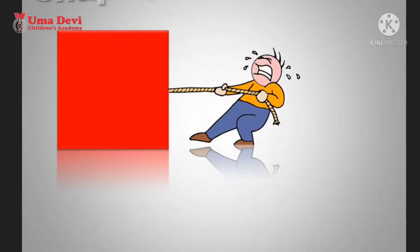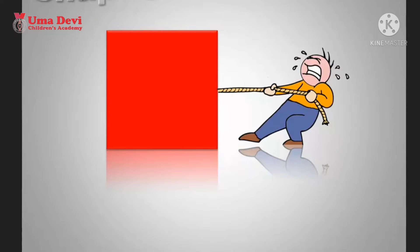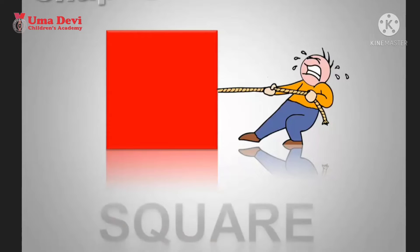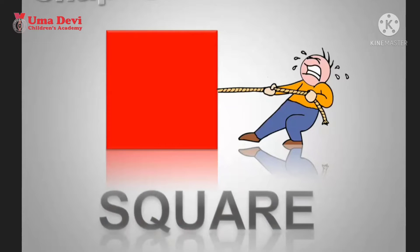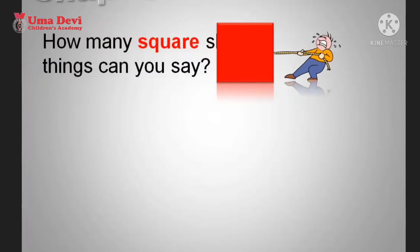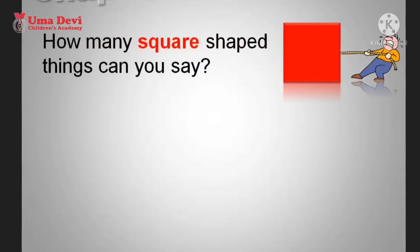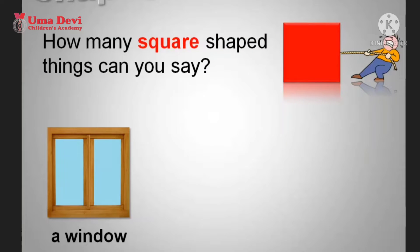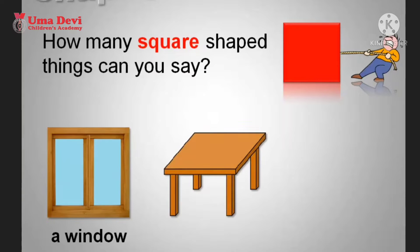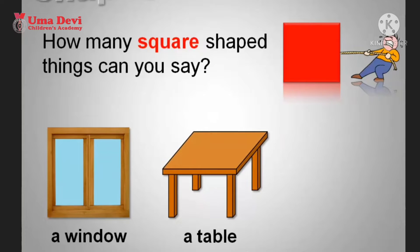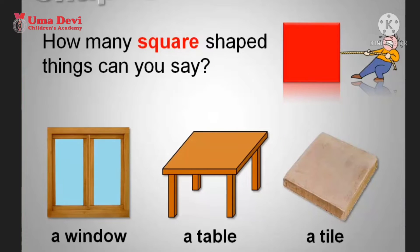Now we are talking about what? Tell me. Square. Yes, square. How many square-shaped things can you say? A window, a table, and a tile.